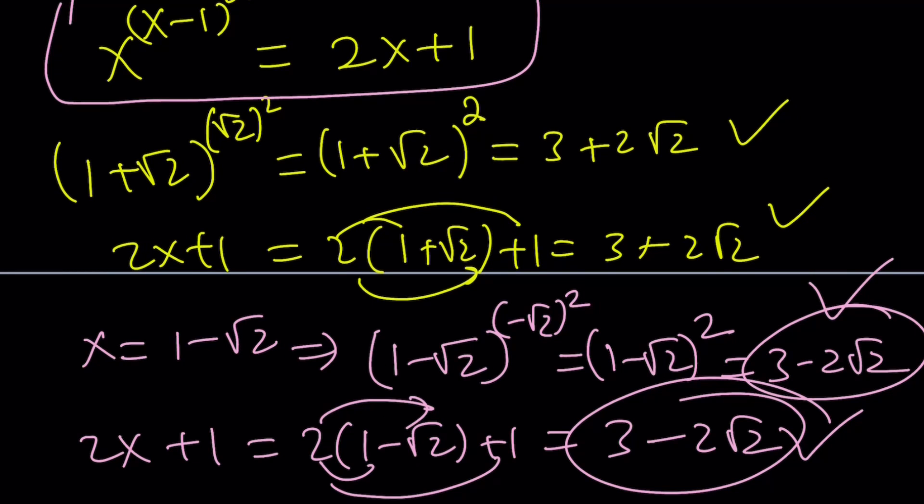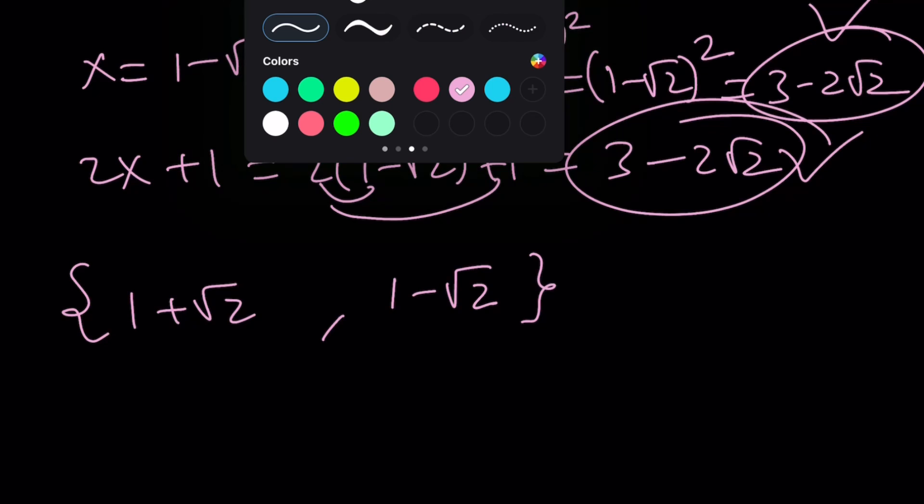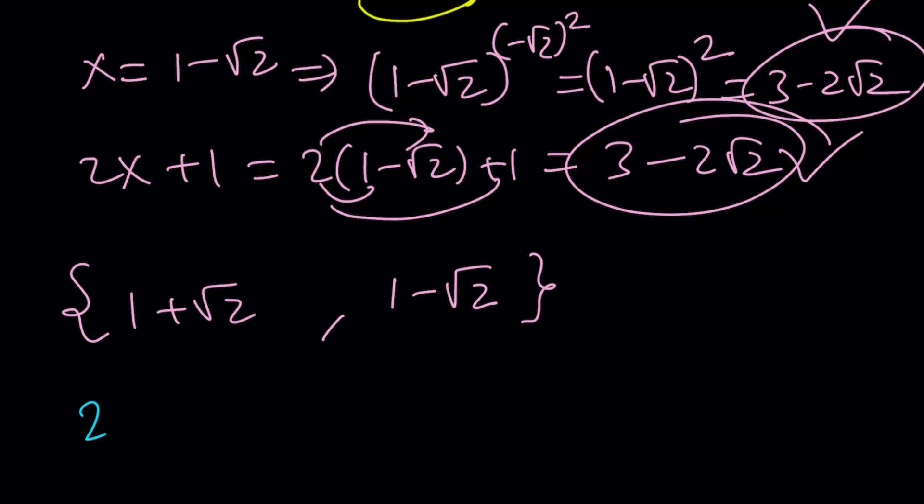x = 1-√2 also works. Which means we have two solutions: 1+√2 and 1-√2 as our solution set. They both seem to work. But on the graph, you're not going to see both solutions. And you may already know why. But first,